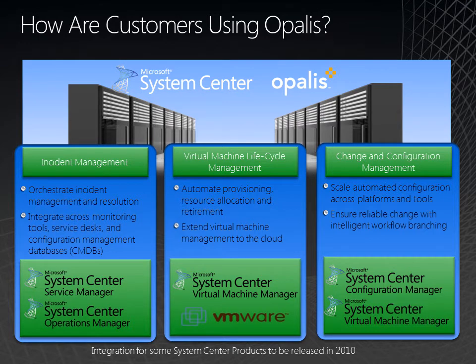So how are customers using Opalis today? There are three major solution areas: Incident Management, Virtual Machine Lifecycle Management, and Change and Configuration Management. For Incident Management, we're talking about end-to-end incident remediation — closed-loop remediation — where we can monitor for alerts in Operations Manager, cut a ticket in a ticketing system, perform some triage, maybe do some false positive checking, perform remediation tasks, and then close out the incident and alert. A person is only involved if something went wrong or it needed to be escalated.